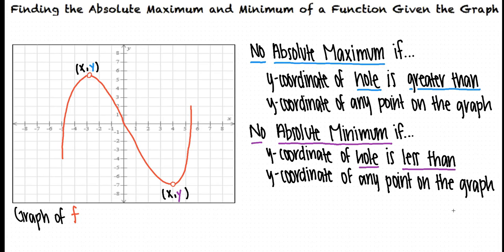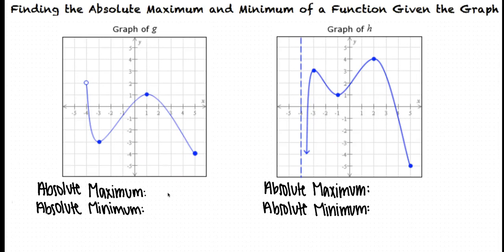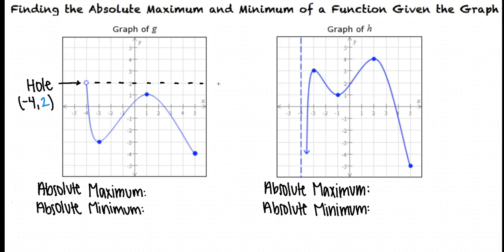So how do we apply these concepts to the problems we have to work through? Let's take a look at the graphs of two different functions. We first want to find the absolute maximum and minimum of the graph of g. We see that there is a hole at negative 4, 2 and the y-coordinate 2 is greater than the y-coordinate of any other point on the graph. Since this is a hole and not actually a point on the graph, there is no absolute maximum for the function g.